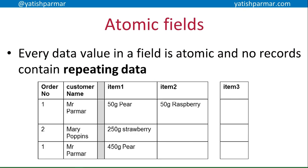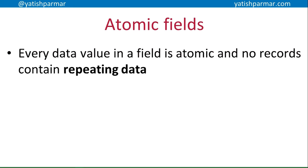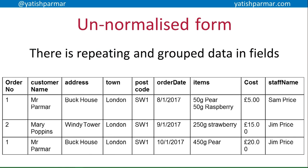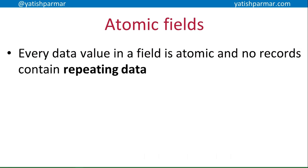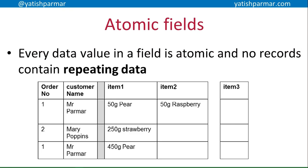An example of that problem is the items field — items are being repeated within a single record. I should only have one item per record, but because it's all grouped up, I've got multiple items. How can I solve it? I could add more columns: item one, item two. But now I'm repeating essentially the same attribute, which is not efficient. What happens if I want to buy more than one item — do I have to add item three, item four, item five? And what happens if I'm only buying one item — am I wasting storage? We don't want records with repeating data.